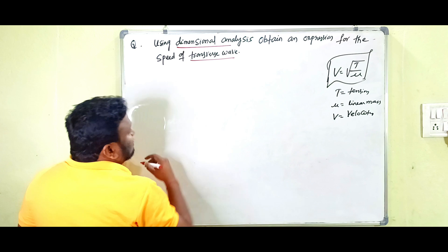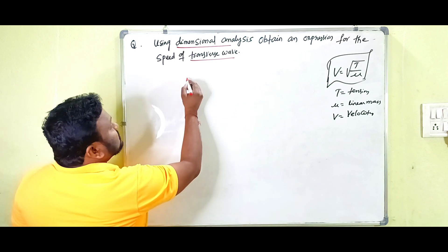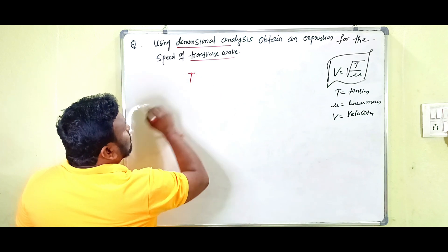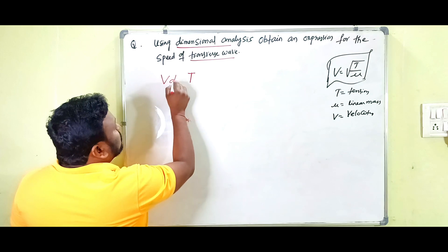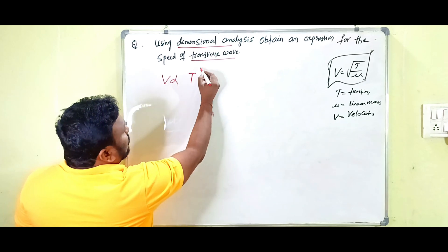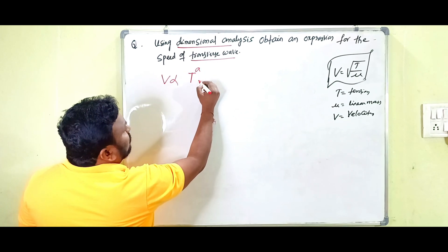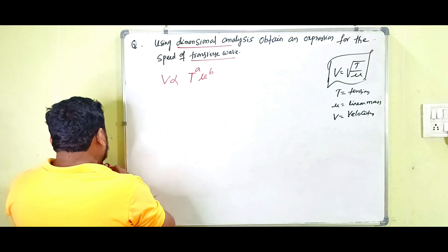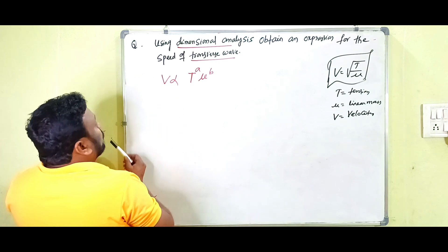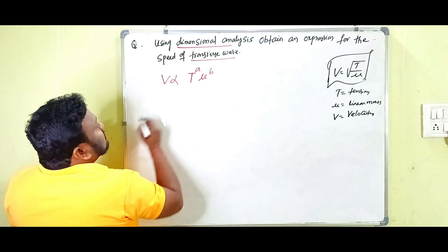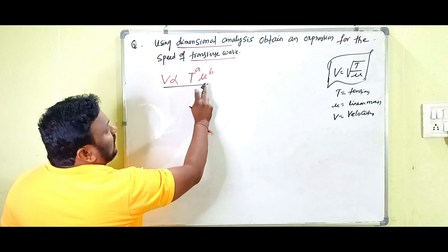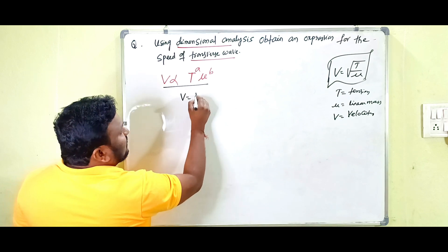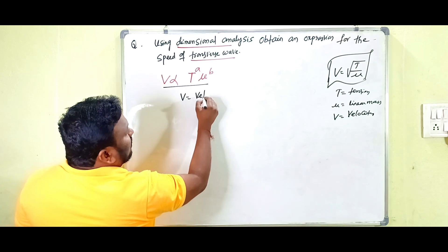Now we have to derive this equation using dimensional analysis. We write: v is proportional to T to the power of a and μ to the power of b. So v is proportional to T^a · μ^b, where v is the velocity.